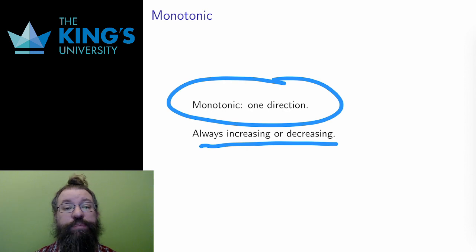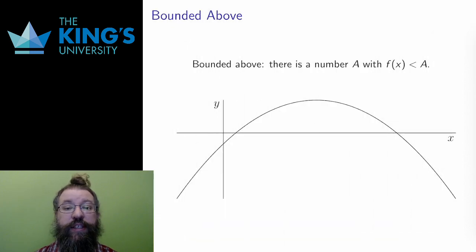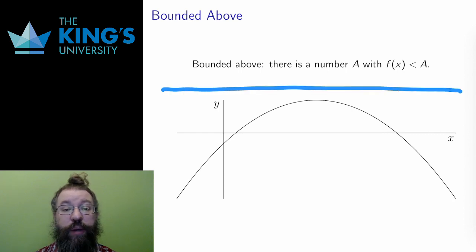A function is bounded above if there is some number a, such that f of x is always less than a. And I can visualize this by drawing a horizontal line at y value a, and the entire graph of the function will sit below the line.